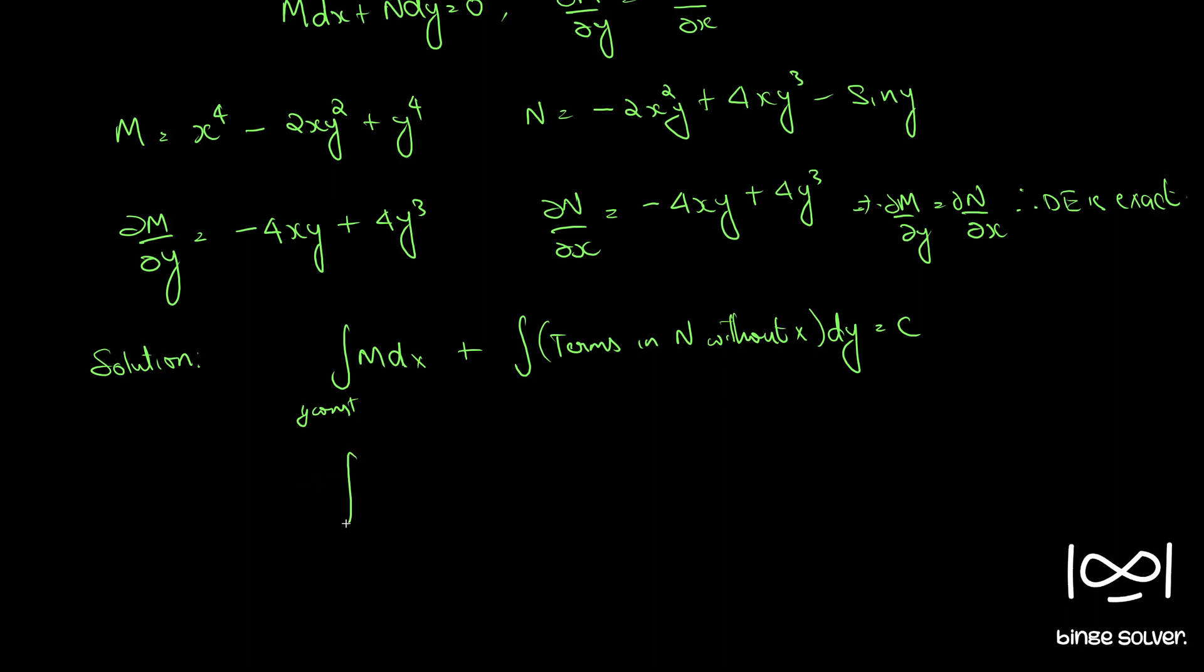So which becomes ∫(x⁴ - 2xy² + y⁴) dx plus terms in N without x. The only term without x is -sin y dy = C.